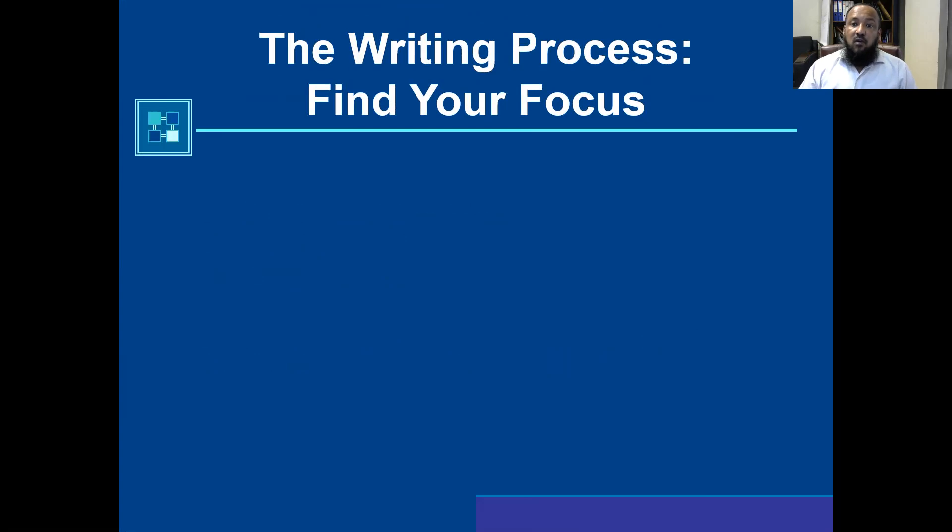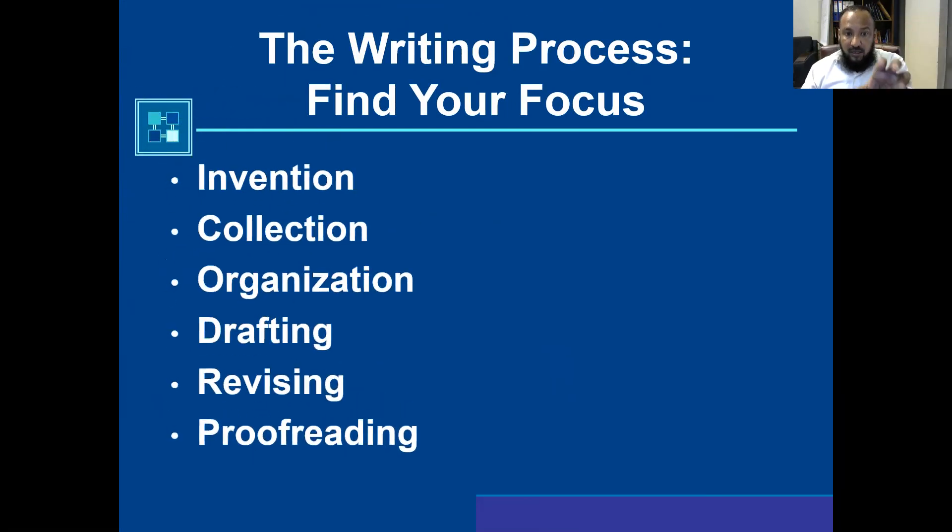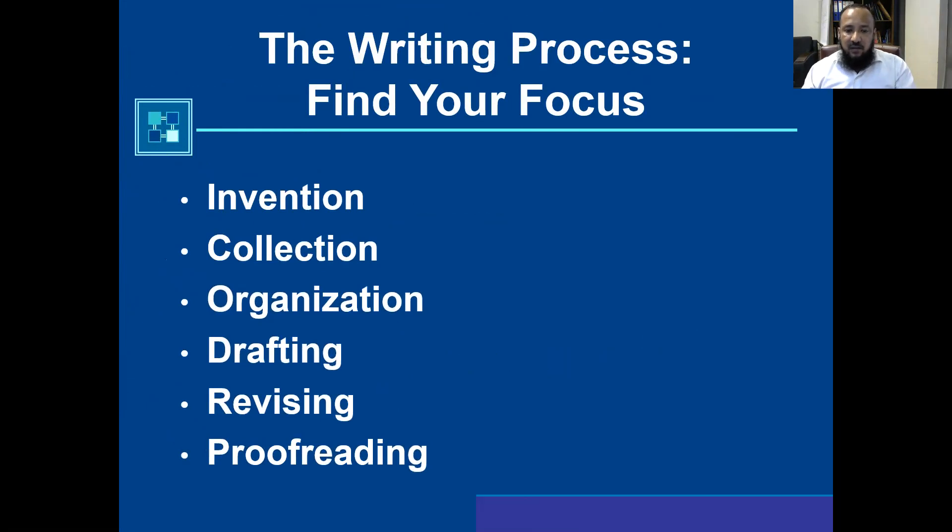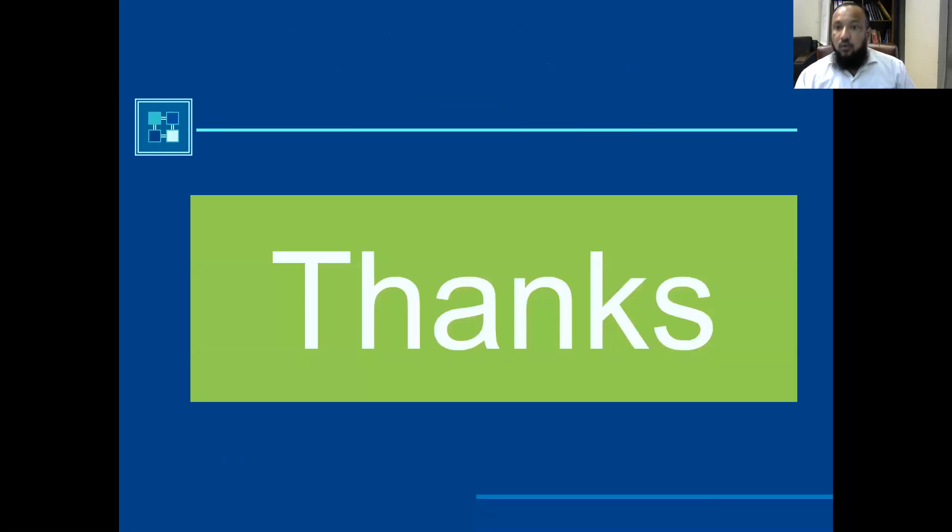The writing process: finding your focus. As we have discussed right now, there are some processes for each and everything. You need to achieve that, you need to achieve a goal. So for effective writing, you need to go through all these: invention, collection, organization, drafting, revising, proofreading. When it is proofread, and after we will check, there will be difference in the first and the last. To apply at least twice this method in your writing, you will see a colossal, great change. Thank you and have a nice time.